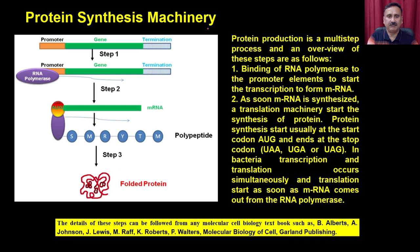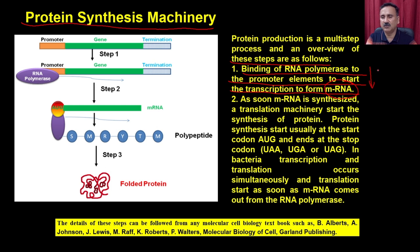Before getting into the different steps required in recombinant DNA technology, we should first understand how protein production occurs in a particular cell. Protein production is a multi-step process. In step 1, RNA polymerase binds to the promoter element to start transcription and form the messenger RNA. This messenger RNA is then utilized in step 2, where a translational machinery starts the synthesis of the protein or enzyme. Protein synthesis starts at the start codon AUG and terminates at the stop codons UAA, UGA, or UAG.